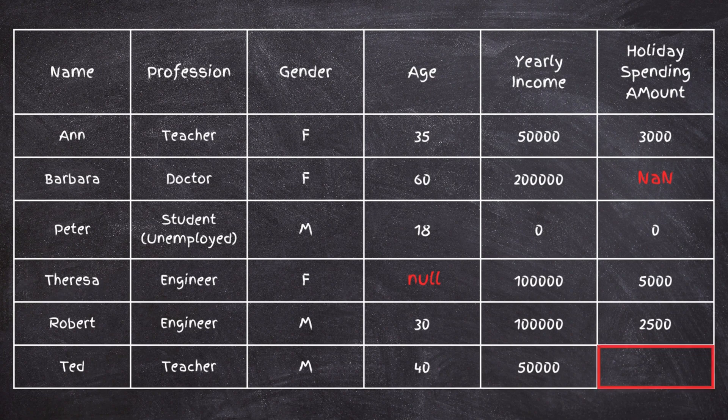Hey everyone, today we're talking about missing values in a data set. These are values that aren't available for a certain column or variable in a data set, and they generally appear as empty values, null values, or NaN values.